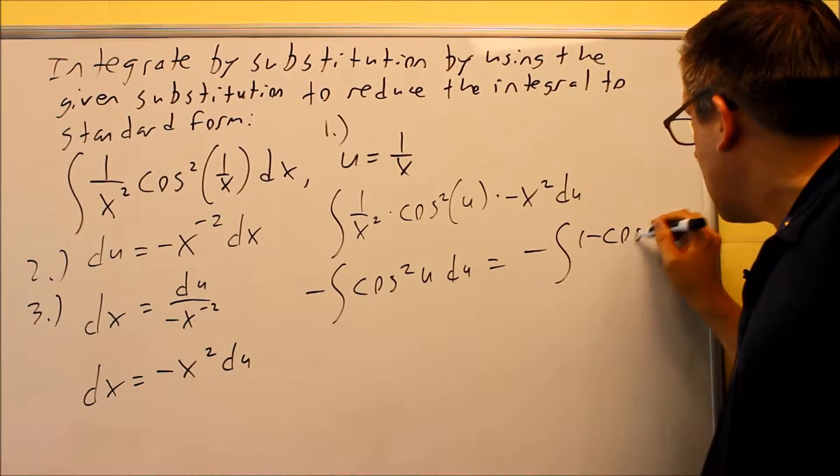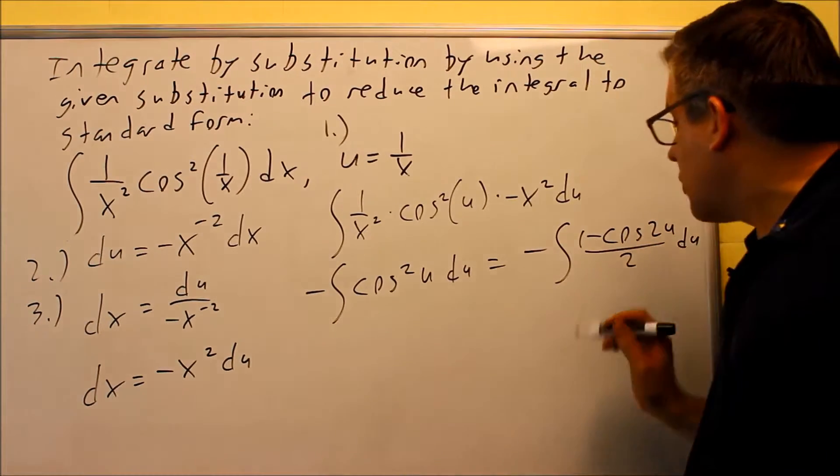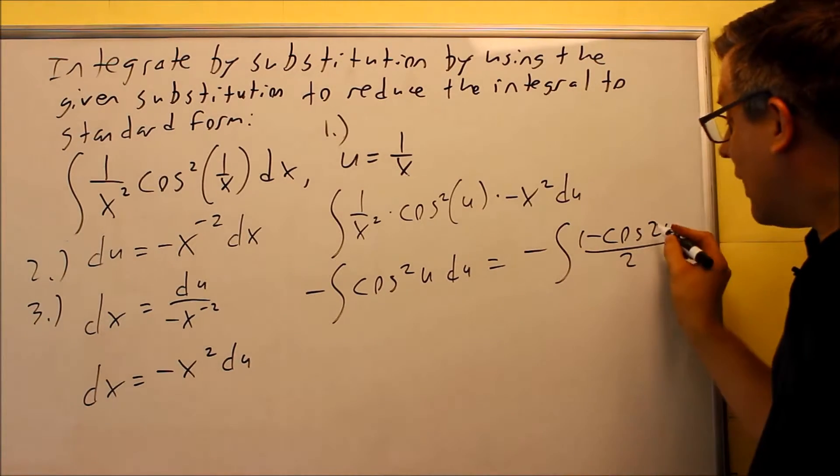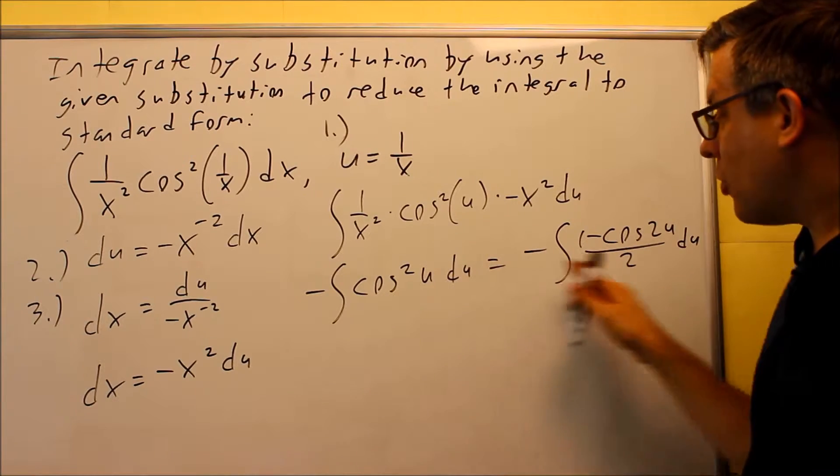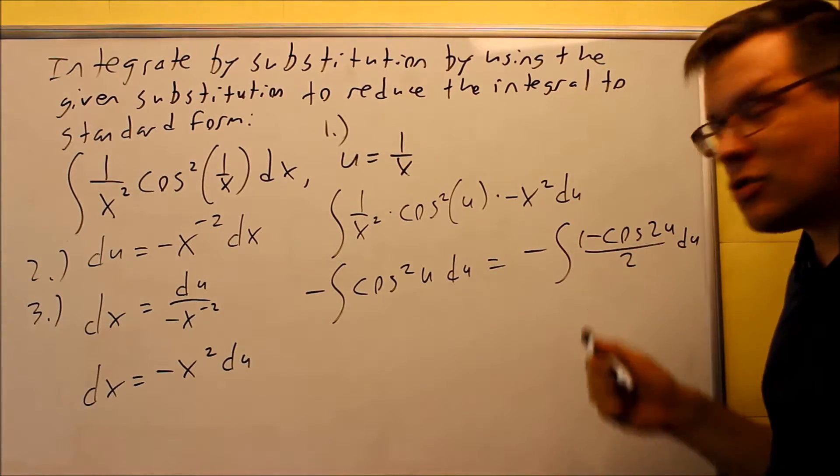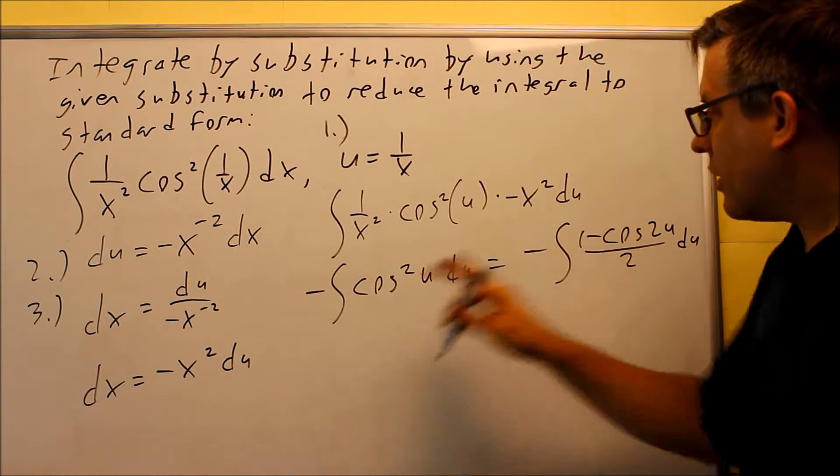is 1 minus cosine 2u over 2, okay, so that's 2 times u on the inside. So this is what cosine squared is equivalent to. These are both the same formula, we're just putting it into this particular format. So now that we've taken it down to here, we're ready to do step 4 where we actually integrate this.